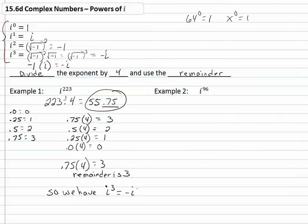Let's look at example two. Again, we're going to take our 96. We're going to divide it by four. And, we're going to get 24. Notice that our decimal is zero, which means that our remainder is zero. So, we have i to the zero power, which is just one. And, we have simplified this power of i.